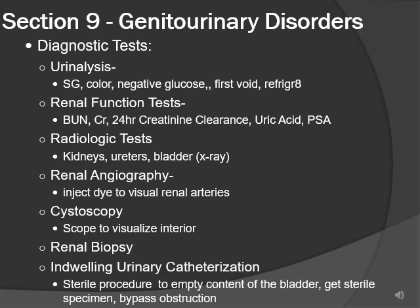Other diagnostic tests include renal function tests — BUN, creatinine, 24-hour creatinine clearance, uric acid, and prostate-specific antigen. You can also do radiologic tests like x-rays to see the kidney, ureters, and bladder. We also have renal angiography, where you inject dye and visualize the renal arteries. We also have cystoscopy, where we put a scope into the bladder to visualize it. And a renal biopsy to take a sample to test for cancer. The last one is indwelling urinary catheterization — a sterile procedure done to empty the bladder, get a sterile specimen, or bypass obstruction.